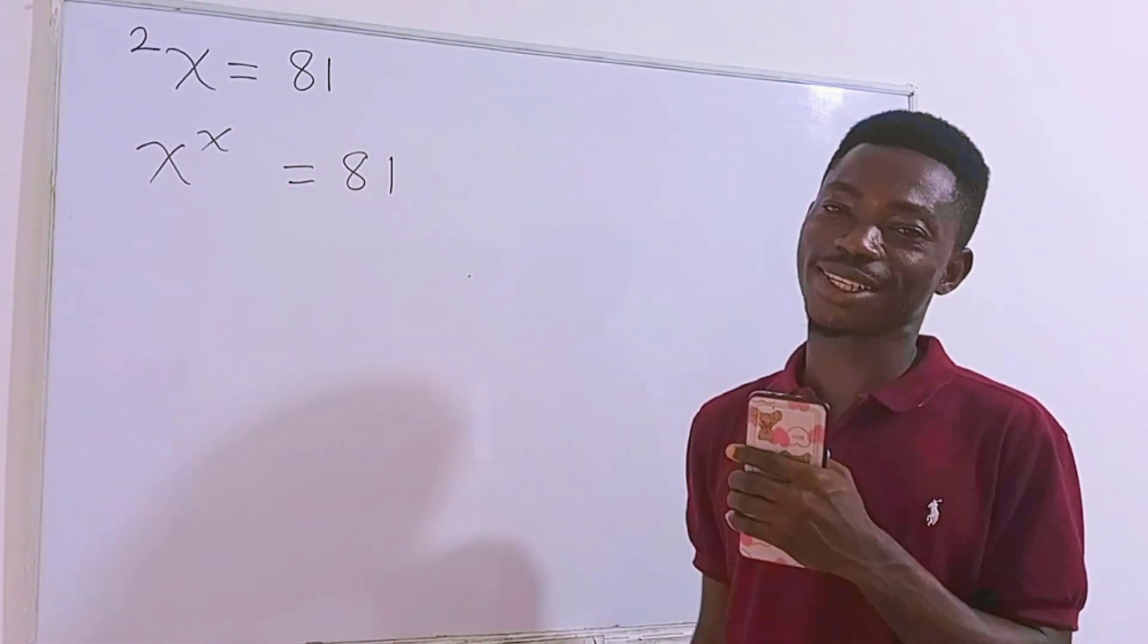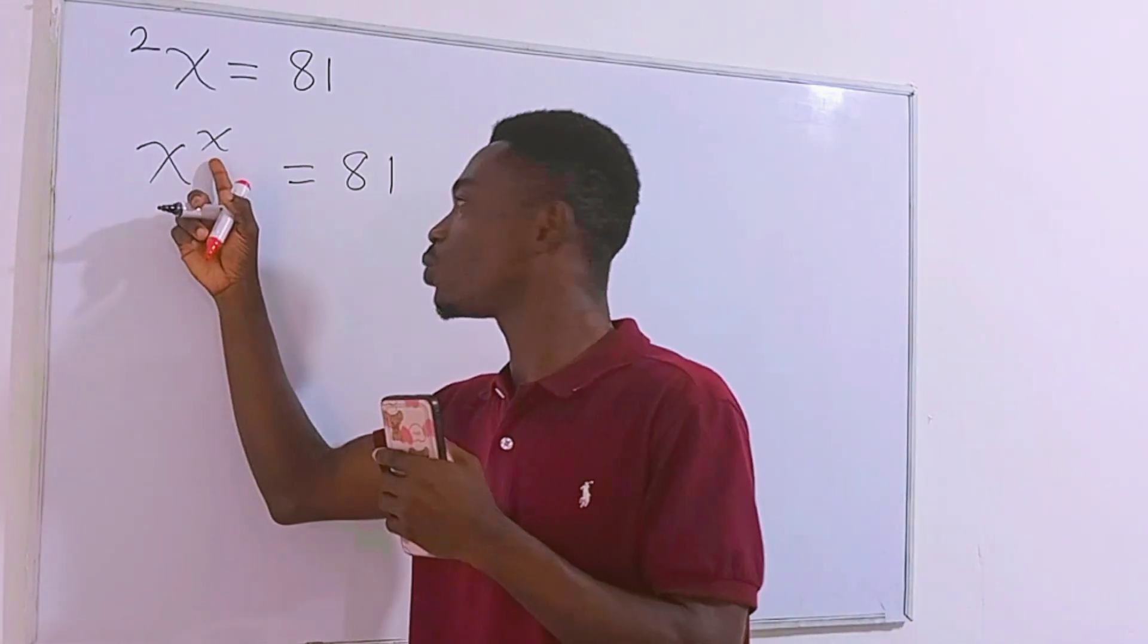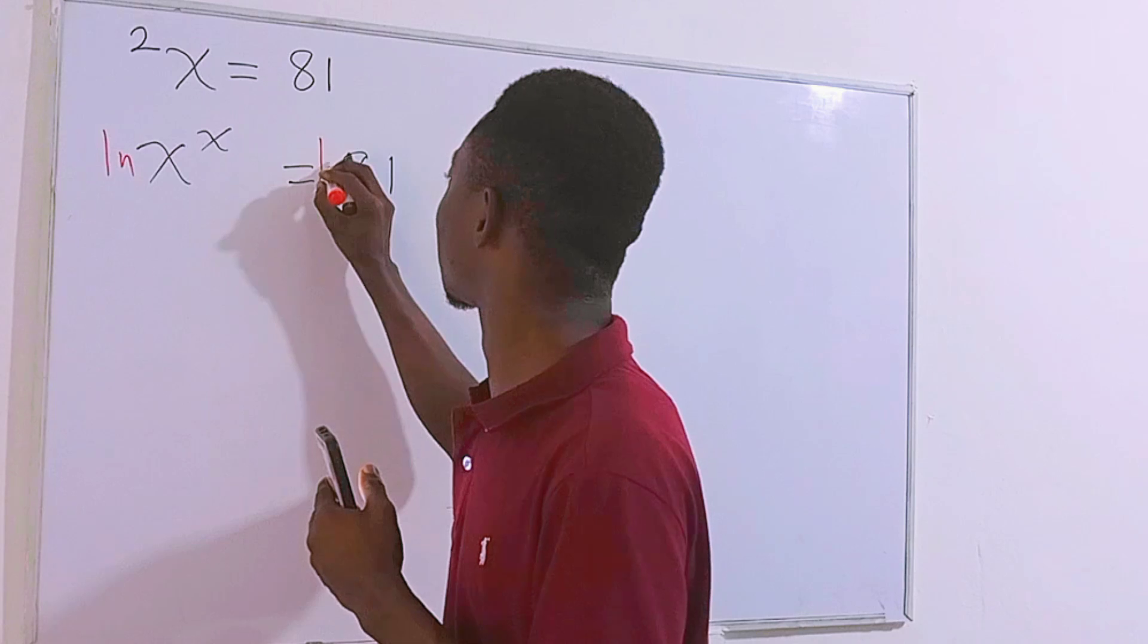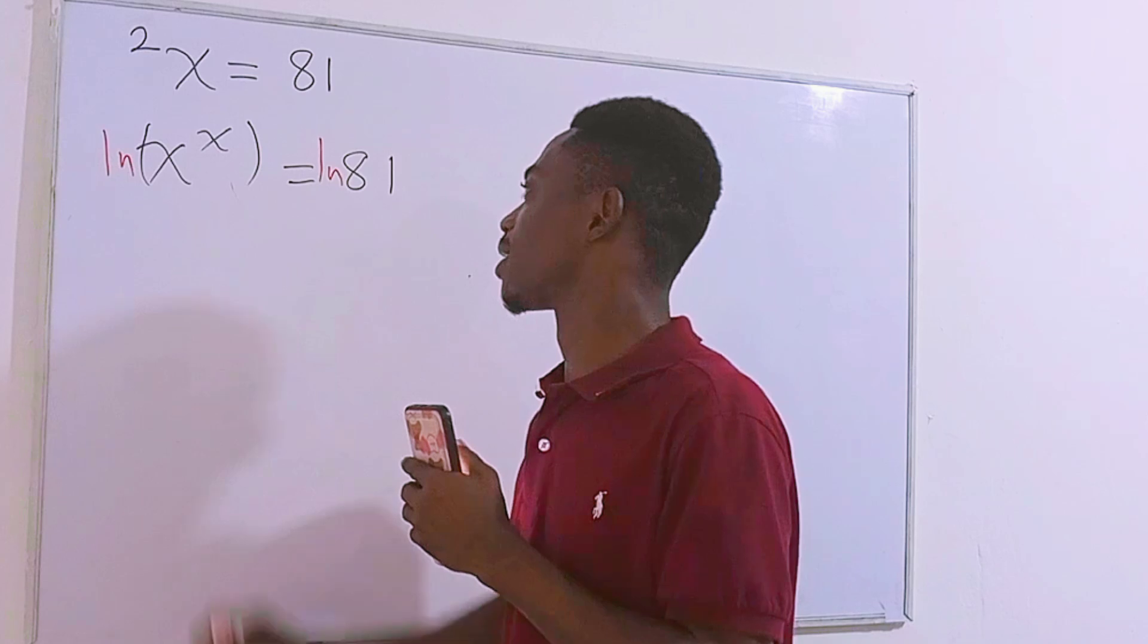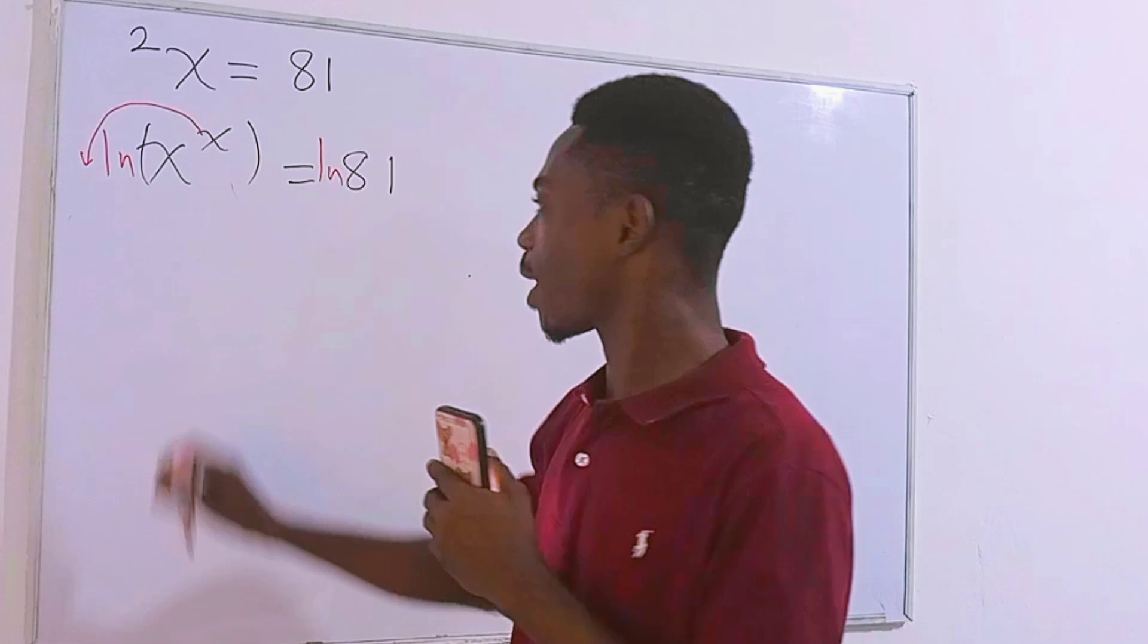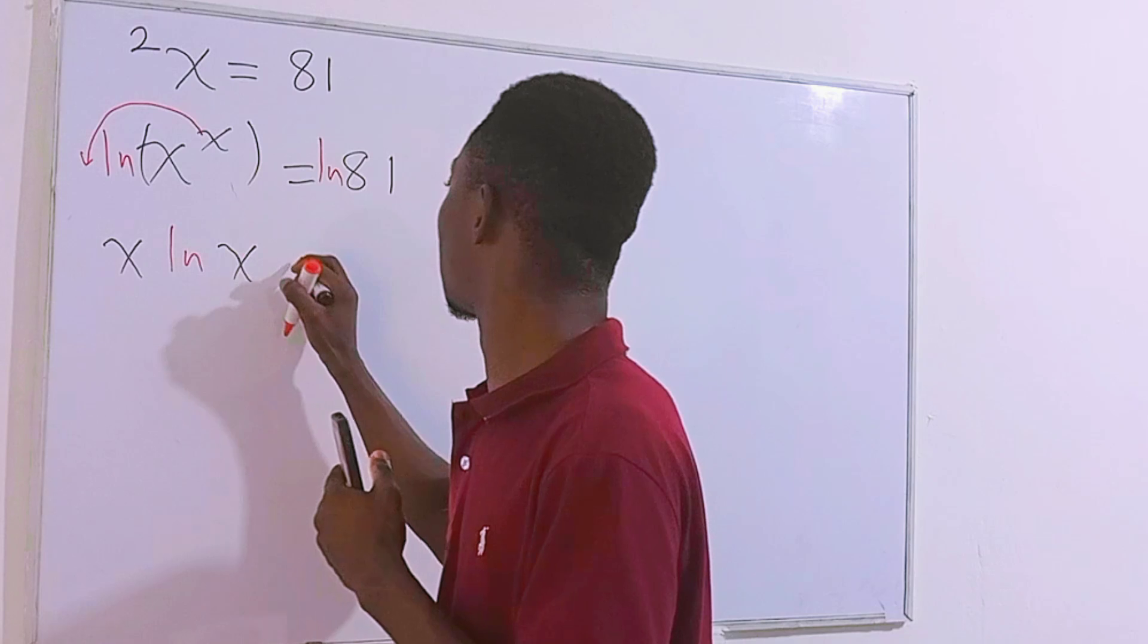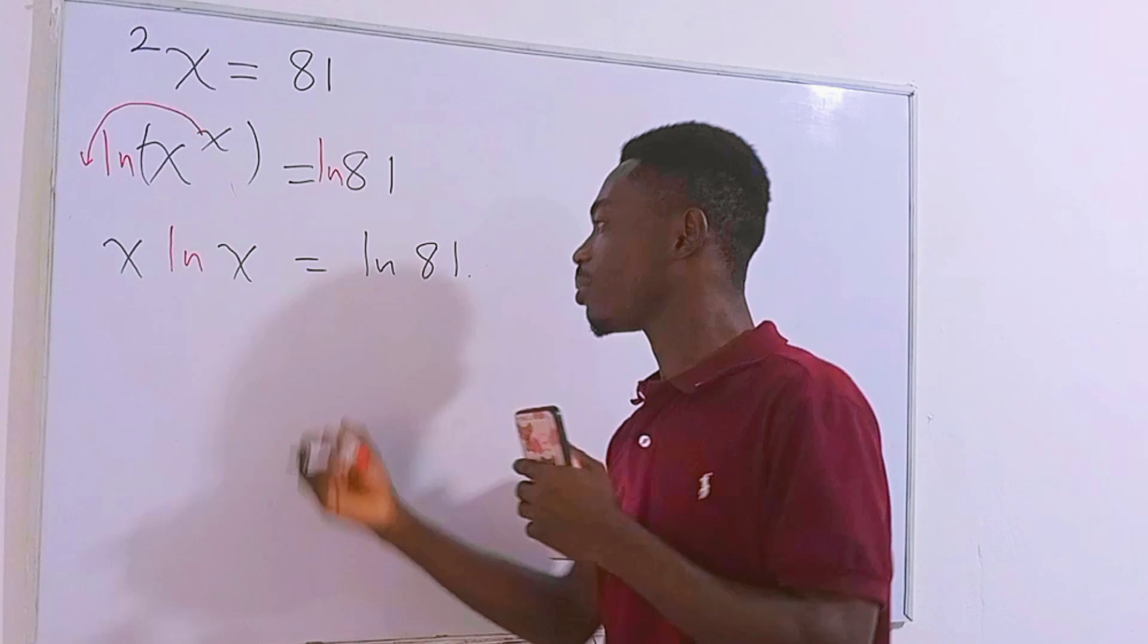Basically this is the meaning of the question. So now that we have this I'm sure we can easily solve. What we need to do first is that we have to drop this power down and to do that we need to introduce ln on each side of the equation. Let me put this in parenthesis just like that. And of course this power right here will come to the front so that we will have x ln of x and this is ln of 81. Pretty nice huh?